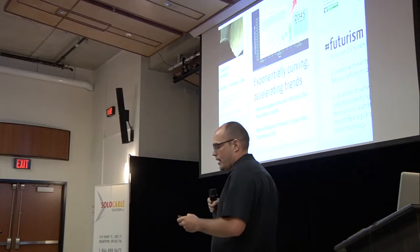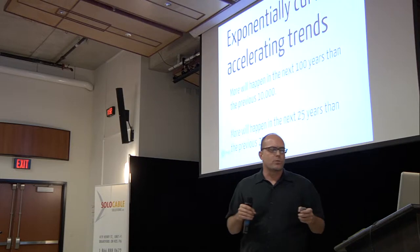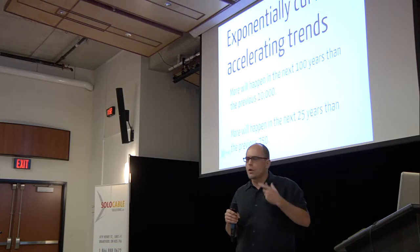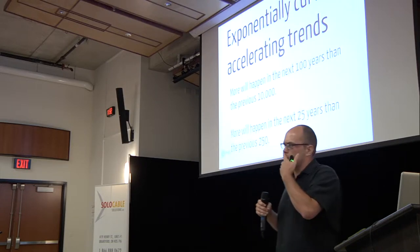When we're talking about futurism, we have to look at this idea that things are accelerating. Everything is getting faster and faster. Exponentially. A couple of statements for you. More will happen in the next hundred years than in the previous 10,000. Or more will happen in the next 25 years than in the previous 250 years. I'm going to say that again. More will happen in the next 25 years than in the previous 250 years. Does that kick in your normalcy bias right there? Does that make you feel like, no, no way?